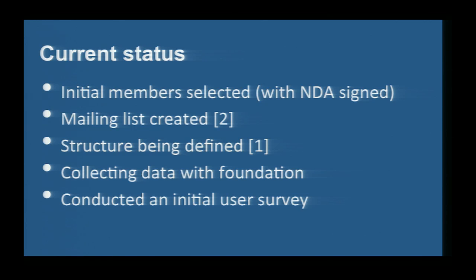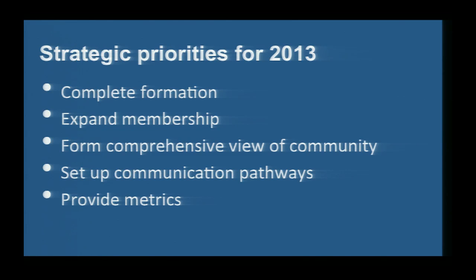We have a number of priorities for 2013. First and most important is actually getting the committee set up and working. After that, we're going to start expanding the membership by doing the appointments. Next, we'll look at all the data collected and start forming a comprehensive view of the community to give reliable feedback to the board and technical committee. Lastly, we're going to set up communication pathways — both public and private — for organizations not willing to publicly disclose they're running OpenStack.